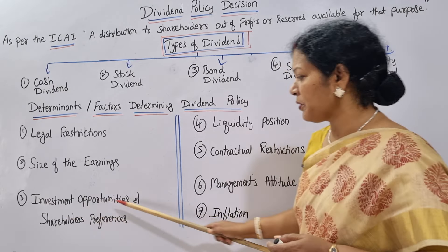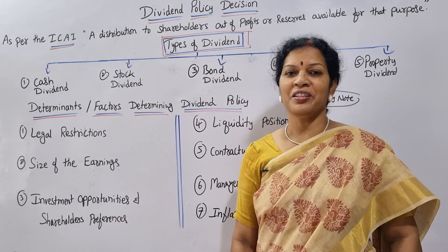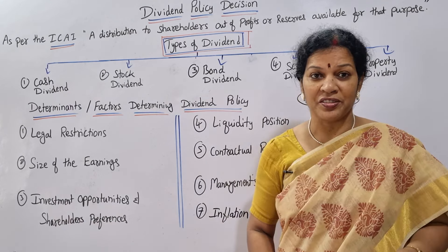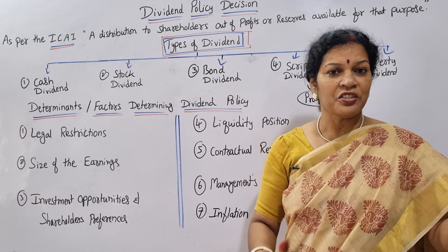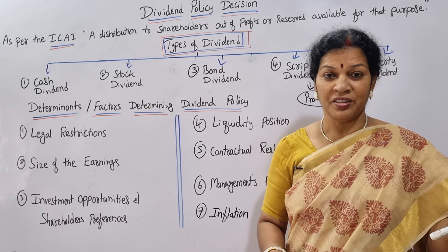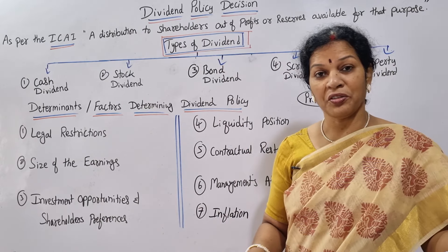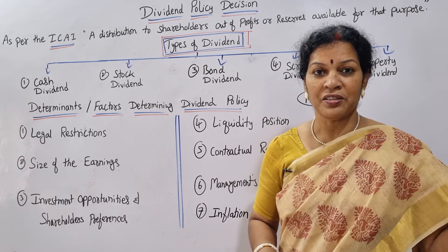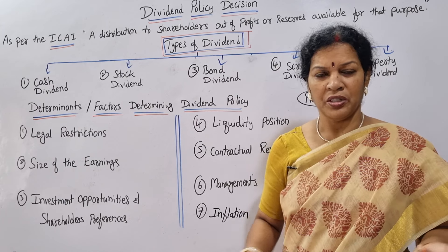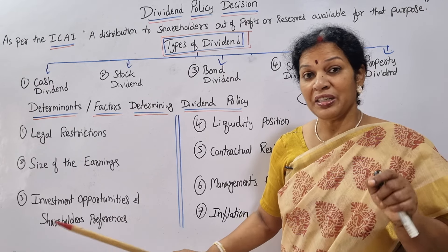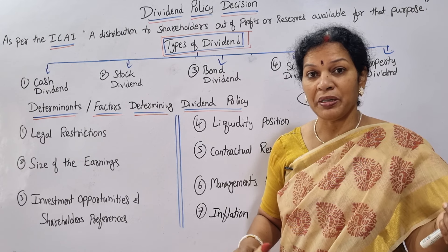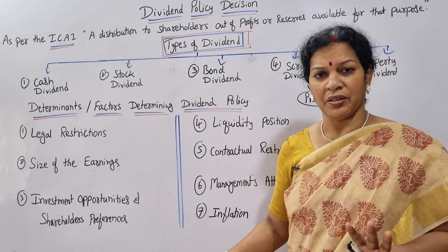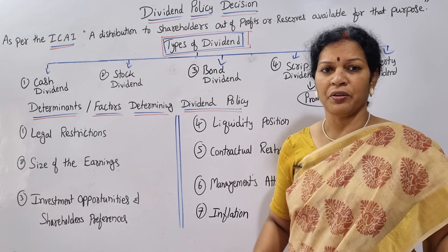The third factor is investment opportunities and shareholders' preferences. If the company needs more funds, rather than distributing dividend they can offer shares — and shareholder preferences are also considered. If shareholders are willing to buy more shares, instead of paying dividend, the company can issue shares. So dividend depends on the company's requirement for funds — if no funds are needed and liquidity is good, dividend can be paid.